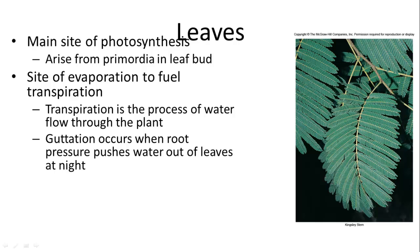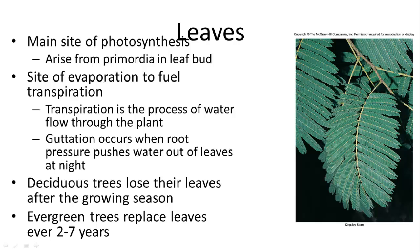Sometimes pressure exerted by the roots — even when evaporation stops — causes fluid to escape or build up on the leaves, and that's called guttation. Deciduous trees lose their leaves after the growing season, either when it gets cold in temperate places or in the dry season in tropical areas. Evergreen trees also replace their leaves, but not all at once — their leaves typically last two to seven years, in varying stages of growth, maturity, or being shed.